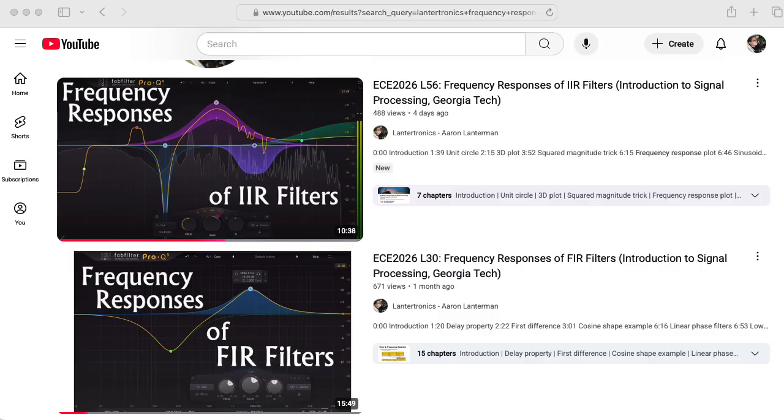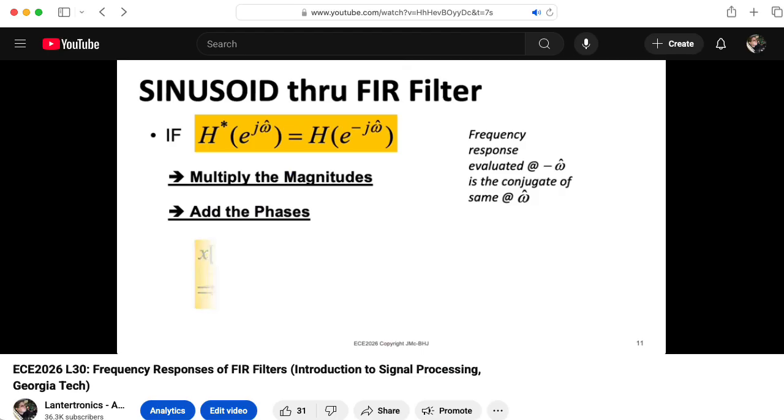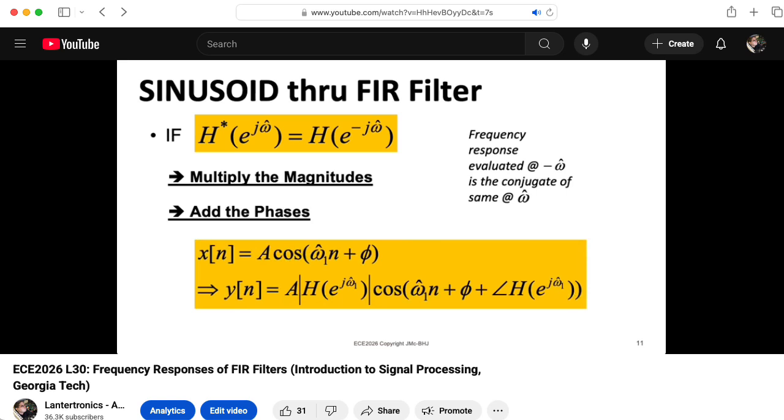We've previously looked at the frequency responses of both finite and infinite impulse response filters. We saw that if you put an infinitely long sinusoidal signal into a linear time invariant system, you get an infinitely long sinusoidal signal out with the same frequency, but the amplitude and the phase may be changed according to the frequency response evaluated at that frequency.